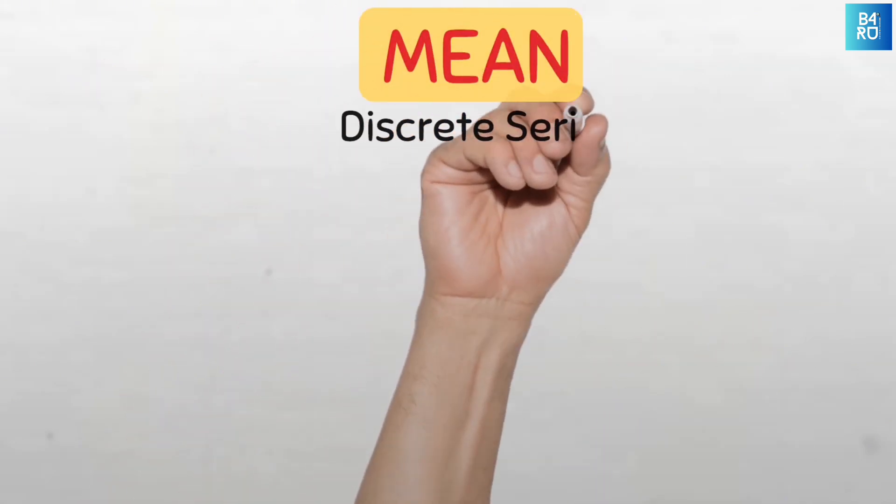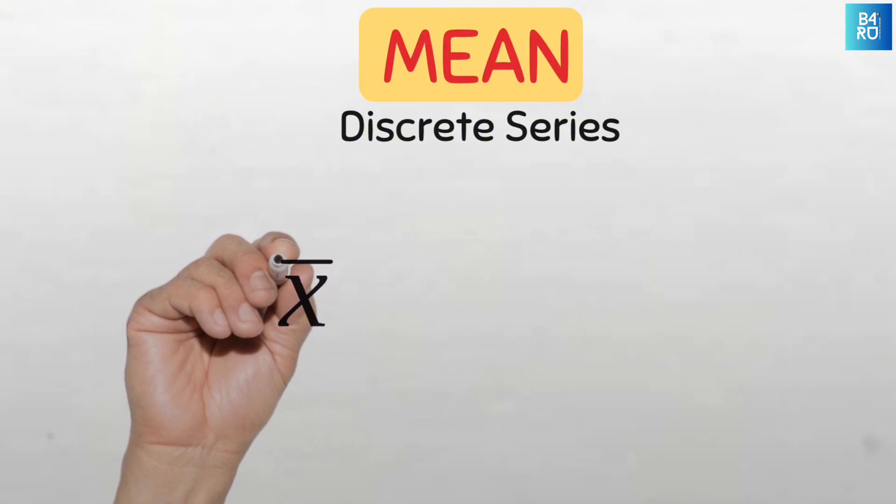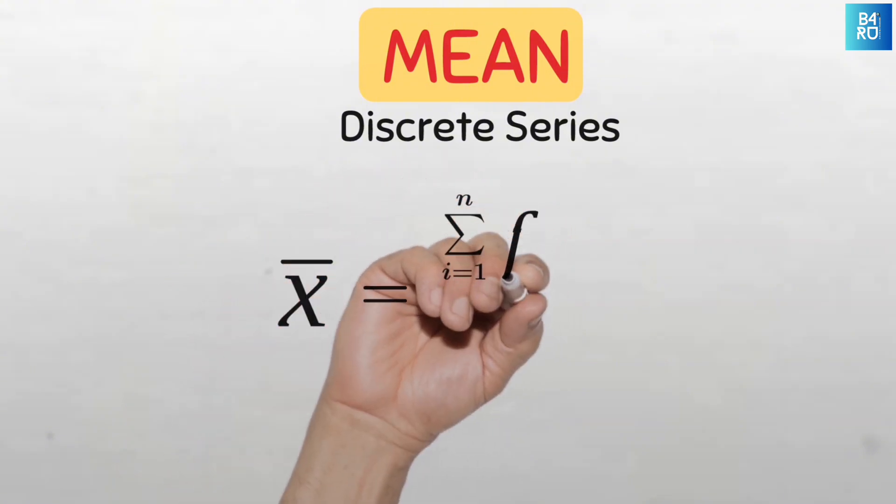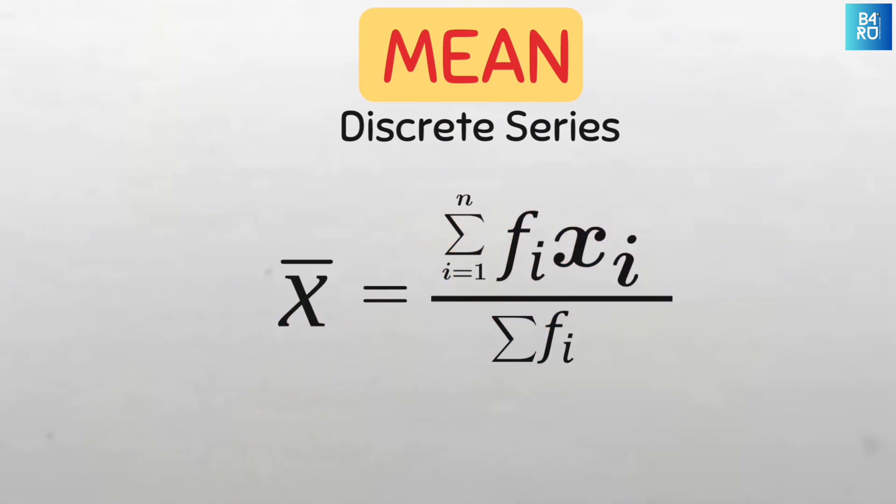The mean of a discrete series dataset is given by the formula. This means the sum of the product of each frequency and each value in the dataset, from the first value to the last value of x, all divided by the sum of all the frequencies, which is the same as the number of values.